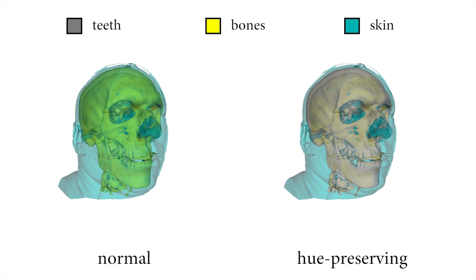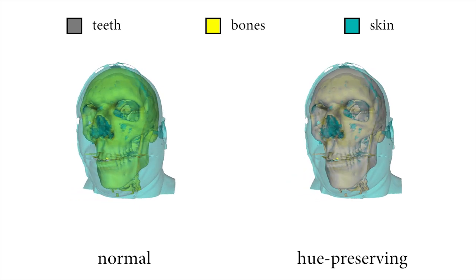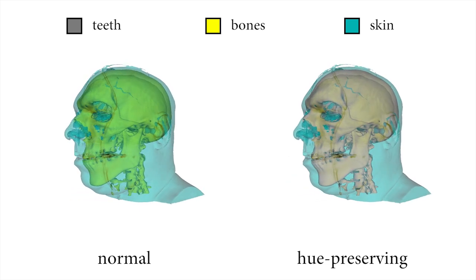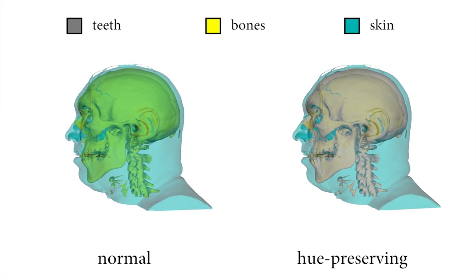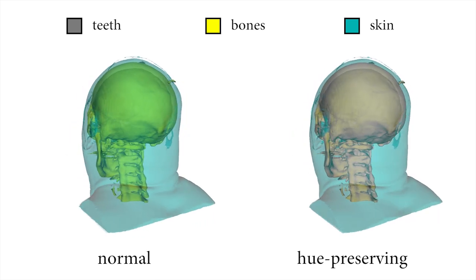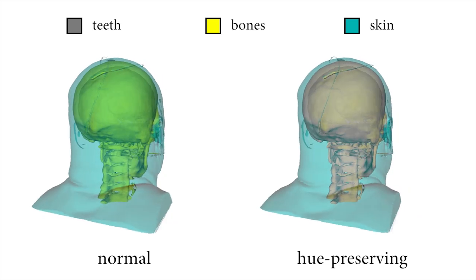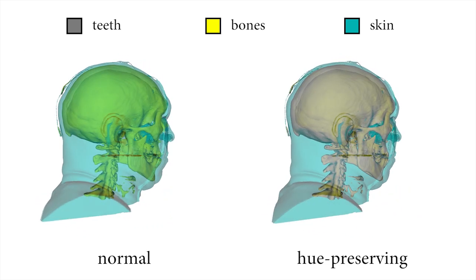We have reproduced an elaborate blending function inside CURE to preserve the original hues of blended isosurfaces. Notice how the rendering on the left receives a greenish tint while the original colors can be easily distinguished with hue-preserving blending on the right.